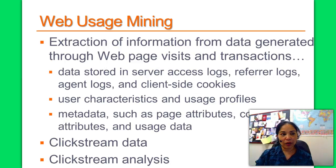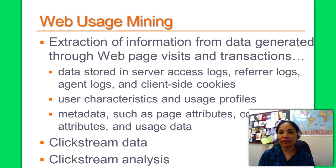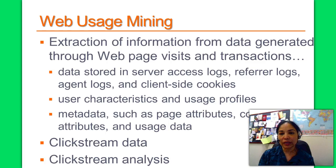Click stream analysis is the analysis of information collected by web servers, which helps us better understand user behavior. For example, it is useful for knowing when visitors access a site. If a company knew that 70% of its software downloads occurred between 7 PM and 11 PM, it would plan for better customer support and network bandwidth during those hours.